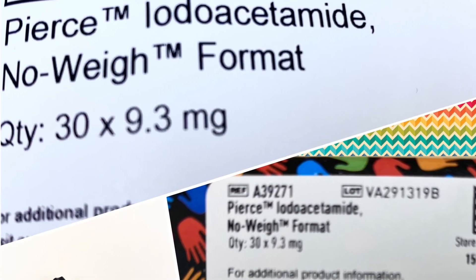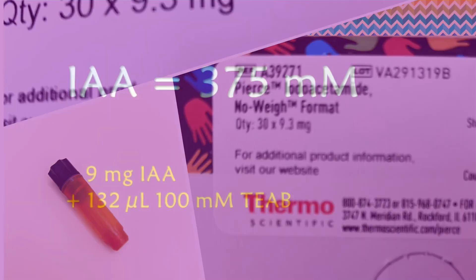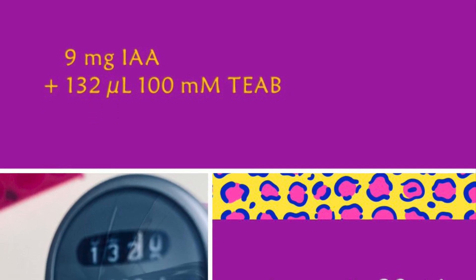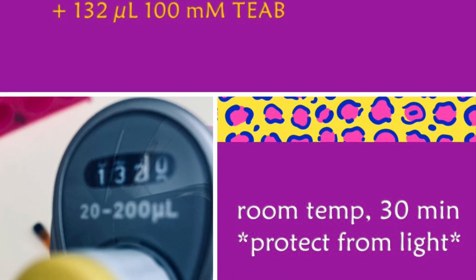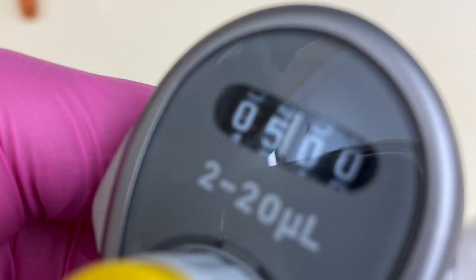Next step is the alkylation. I will be using IAA or iodoacetamide. I'm needing 375 millimolar solution, so I'm going to make that. After that, I will be taking 5 microliters of IAA solution, adding into my sample, and shake 30 minutes in the thermomixer at room temperature. I will make sure that my samples are protected from the light.